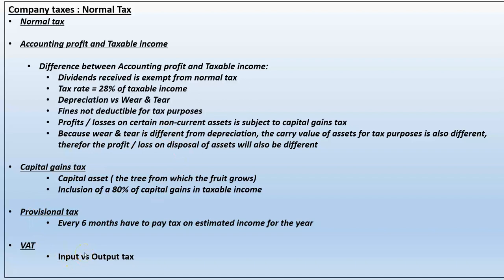Most companies also have the opportunity to make a third provisional tax payment. If they haven't paid enough tax with the first and second provisional tax payments, they must top it up within a certain period of time with a third provisional tax payment to avoid incurring interest and penalties.